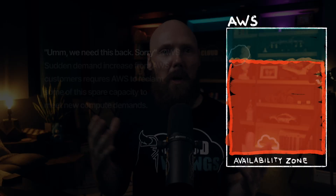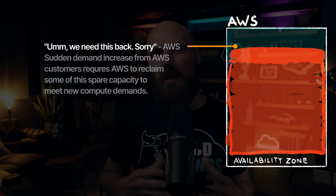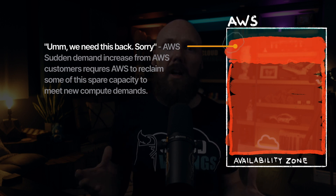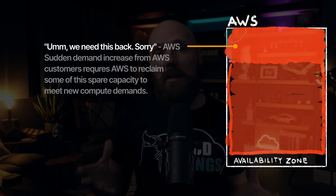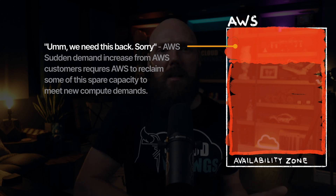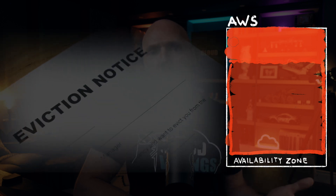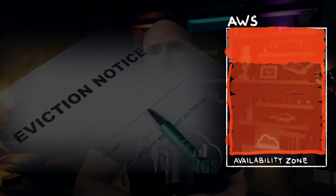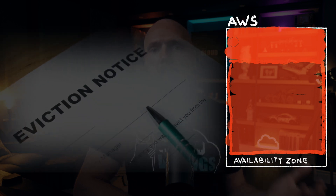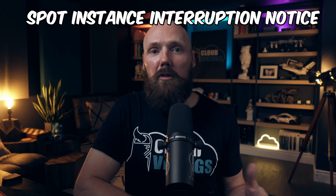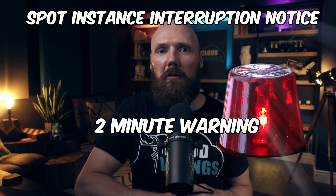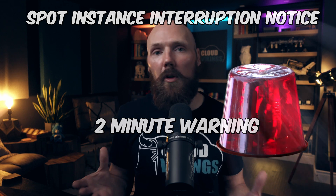These instances run in the spare capacity of AWS. So what happens if there's a sudden spike of customers needing to launch EC2 instances? If AWS doesn't have enough free compute capacity available, they'll essentially kick your spot instances out of the surplus capacity zone so they can run on-demand EC2 instances for other customers. AWS sends you a spot instance interruption notice two minutes ahead of time before your spot instances are stopped or terminated.